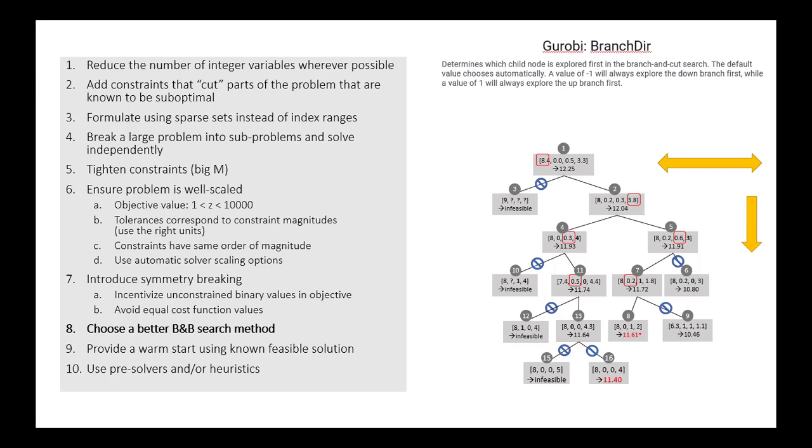The value minus 1 will always explore down first, while the value 1 for this parameter will always explore the up branch, or the higher-level branches first. So this is one way that you can go about trying to tailor the solver's solution method for your problem.